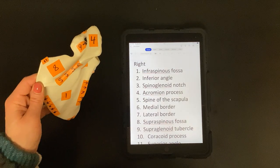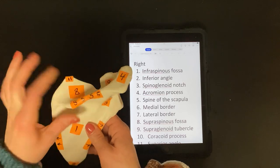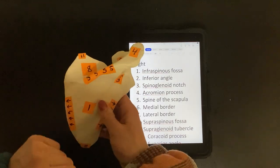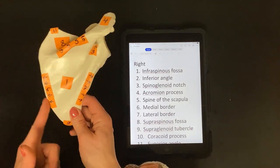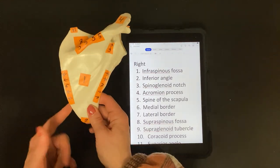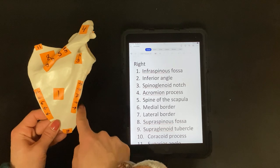Five is the spine of the scapula. Remember to be specific that it's of the scapula. Six is going to be your medial border, and then seven is your lateral border.